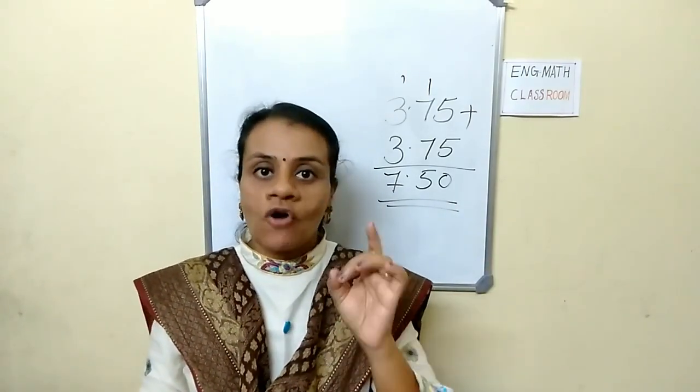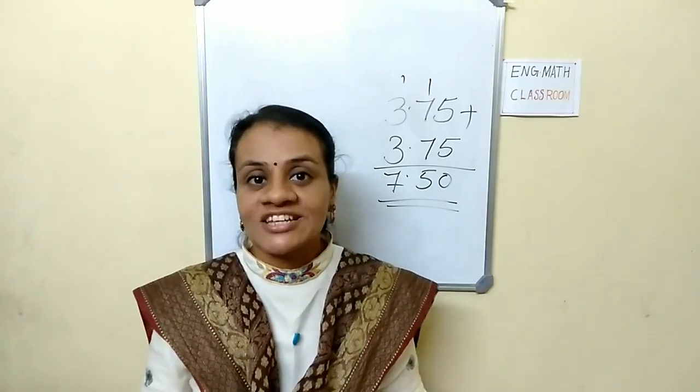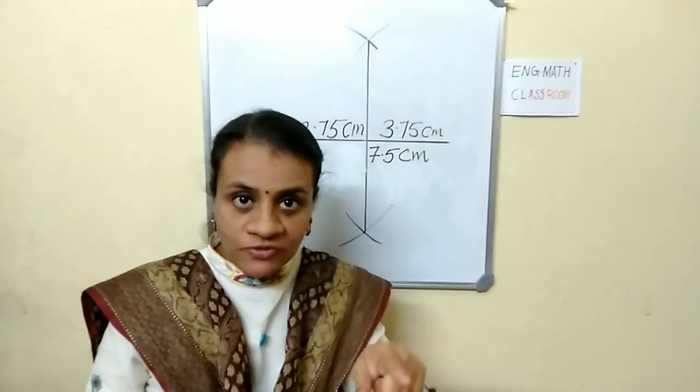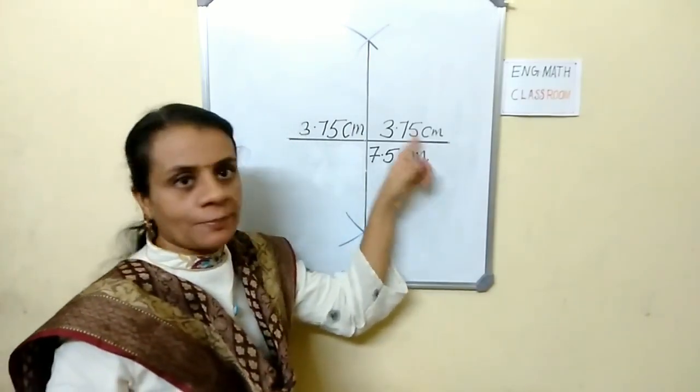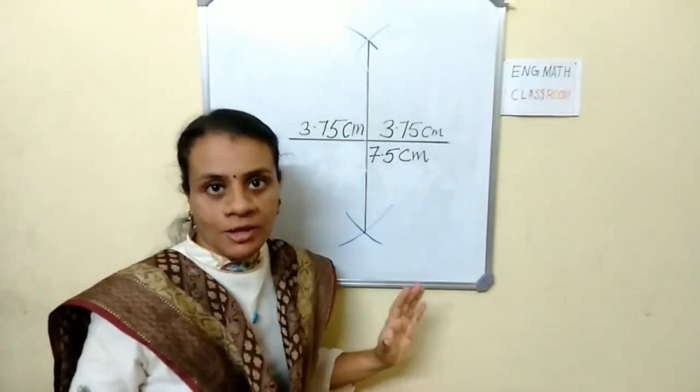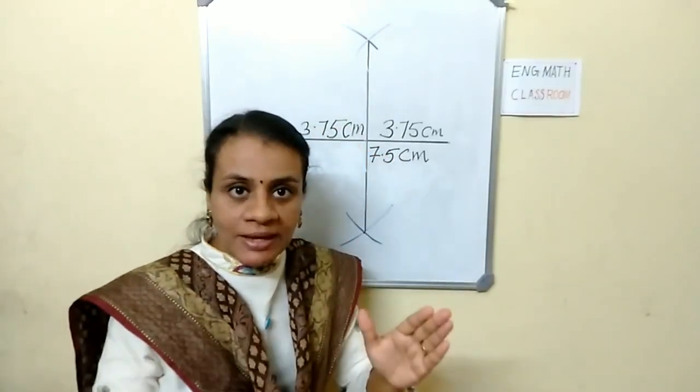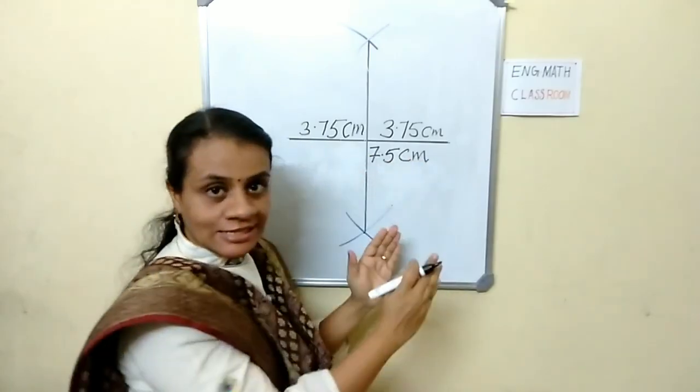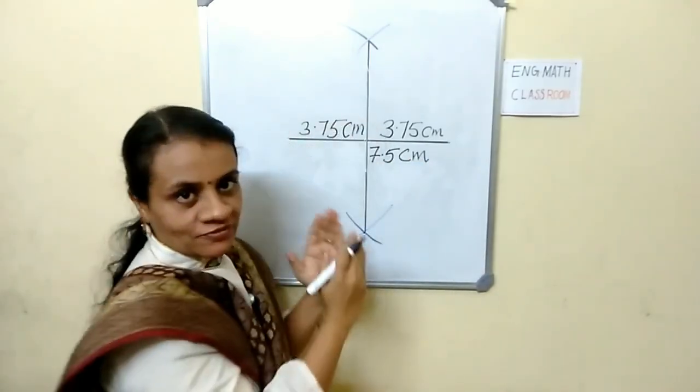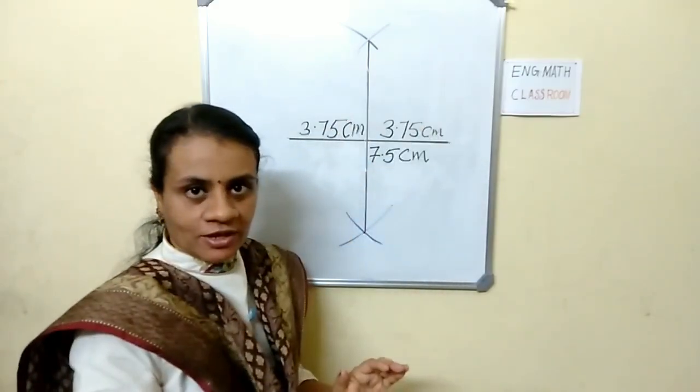So draw a line of length 7.5 cm. Did you draw a line of length 7.5 cm? Now draw the perpendicular bisector. I have already drawn the perpendicular bisector. And this bisector divides this line into 2 equal parts: 3.75 and 3.75.